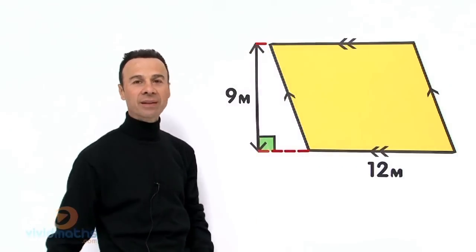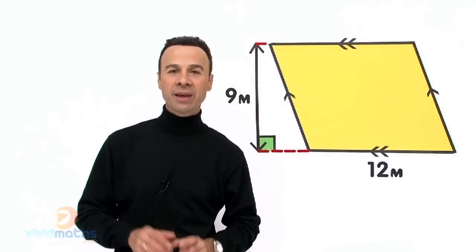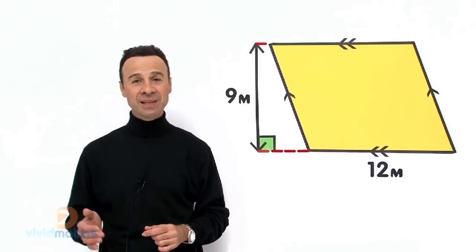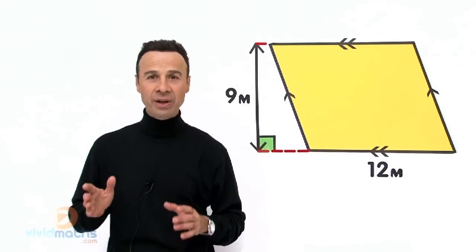Now it's on a slant, it's not a rectangle, and the way to work the area is kind of similar to a rectangle but it requires a base and a perpendicular height, a vertical 90-degree height.